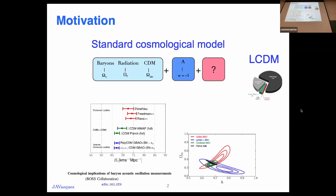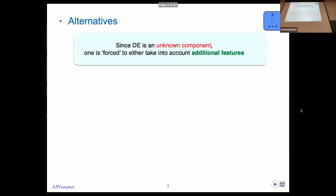There are also some minor problems like the H0 and sigma-8 tensions. And of course some theoretical problems like the coincidence problem or the fine-tuning problem. In order to alleviate these tensions, we need to go a step forward beyond the cosmological constant and take into account new features.